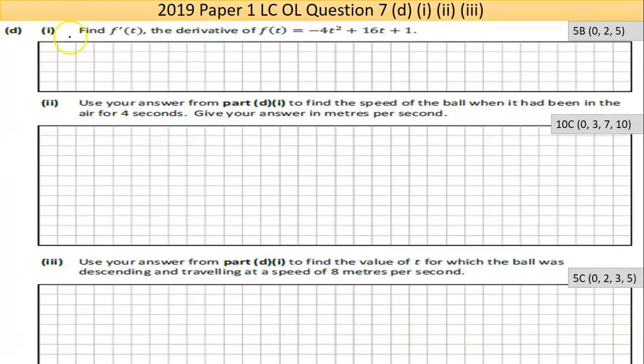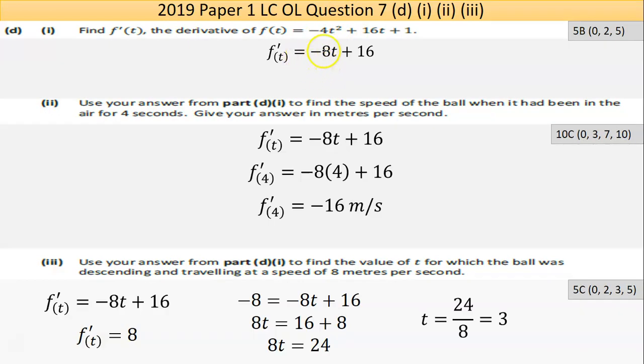Part D, part one here says, find f'(t). So find the derivative of that. We've differentiated in the previous question on this paper as well. So to differentiate, multiply the power by number in front. So the answer will be here: 2 by negative 4 is negative 8. Step two of the power rule and differentiation says, take 1 from the power. 2 take 1 is 1.